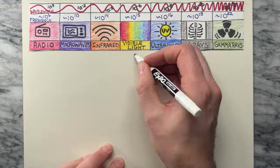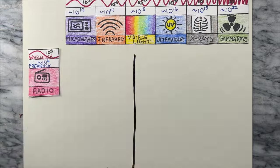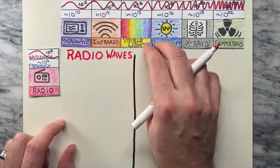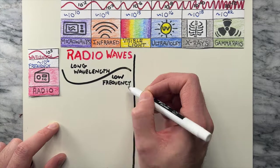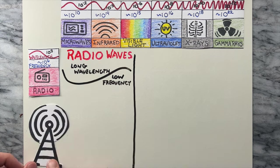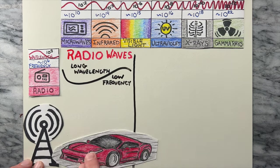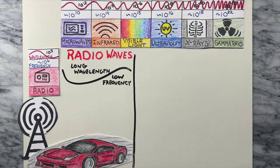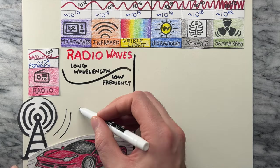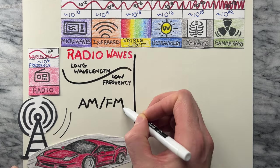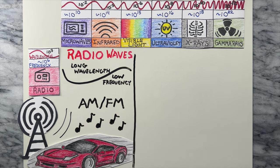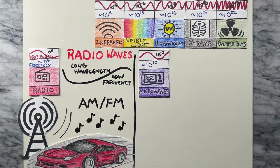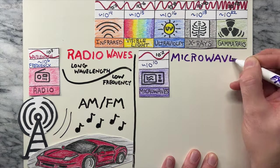The first part of the electromagnetic spectrum are radio waves. Radio waves have long wavelengths and low frequencies when compared to the rest of the spectrum. They are perfect for transmitting AM and FM radio and TV signals.